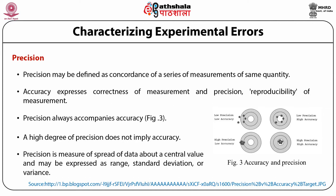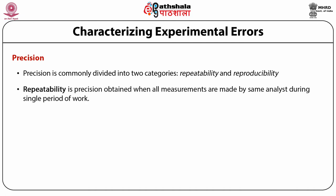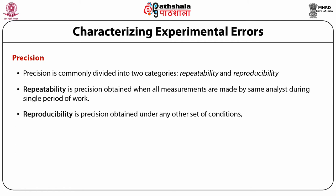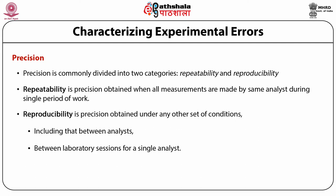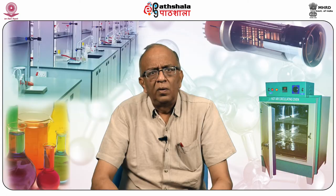Precision may be defined as the concordance of a series of measurements of the same quantity. Accuracy expresses the correctness of a measurement; precision expresses the reproducibility. Precision always accompanies accuracy but a high degree of precision does not imply accuracy. Precision is a measure of the spread of data about a central value and may be expressed as the range, the standard deviation, or the variance. Precision is commonly divided into two categories: repeatability and reproducibility. Repeatability is the precision obtained when all measurements are made by the same analyst during a single period of laboratory work. Reproducibility is the precision obtained under any set of conditions, including between analysts or between laboratory sessions.